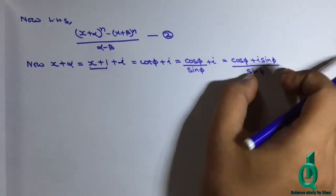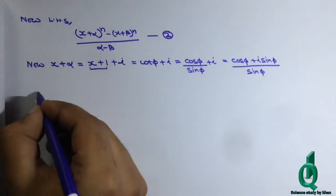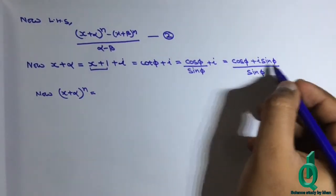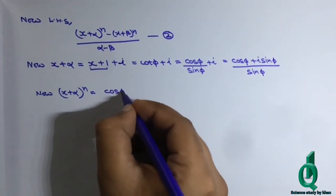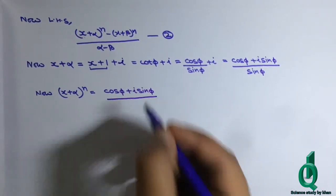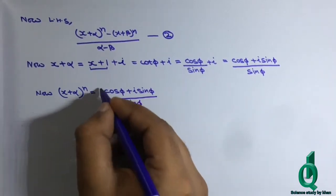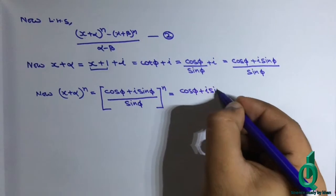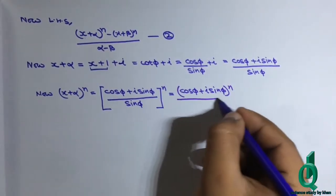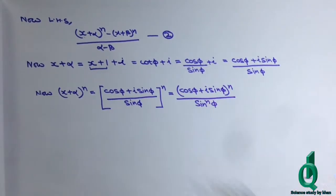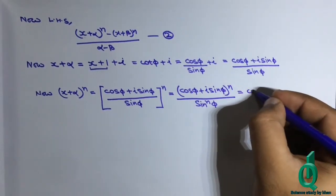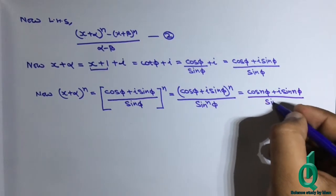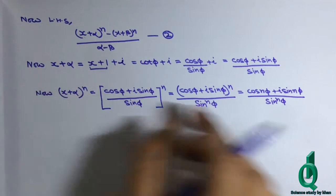Solving: x + α = (cos φ + iota sin φ) / sin φ। अब हमें (x + α)ⁿ find करना है। By De Moivre's theorem: (cos φ + iota sin φ)ⁿ / sinⁿ(φ) = (cos nφ + iota sin nφ) / sinⁿ(φ)। यह x + alpha whole power n की value है।